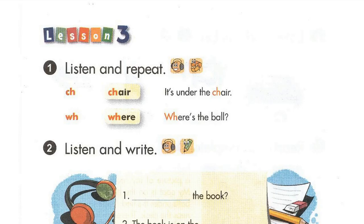Page 22, Lesson 3, Activity 1: Listen and repeat. Chair. It's under the chair. Where? Where's the ball?